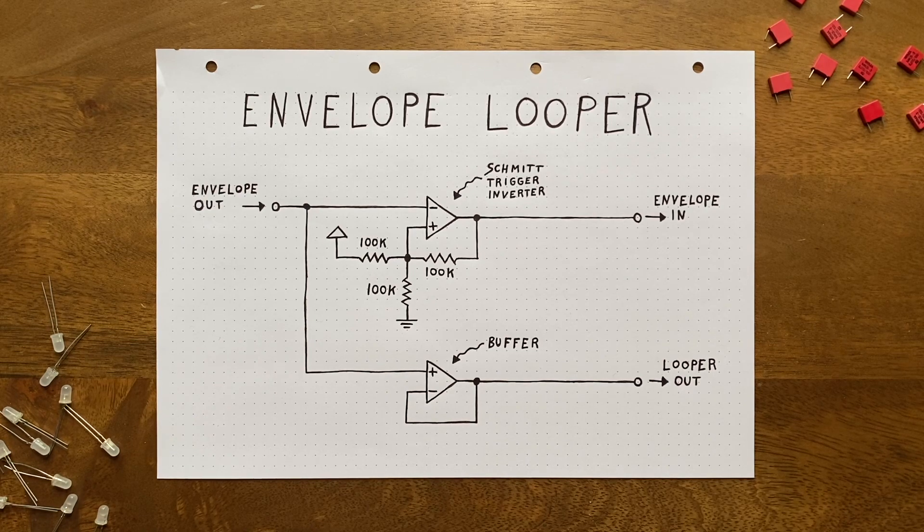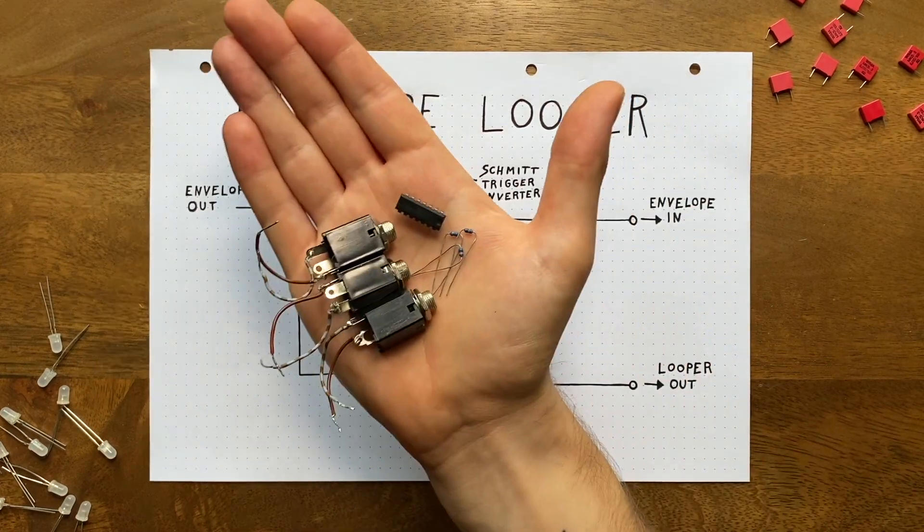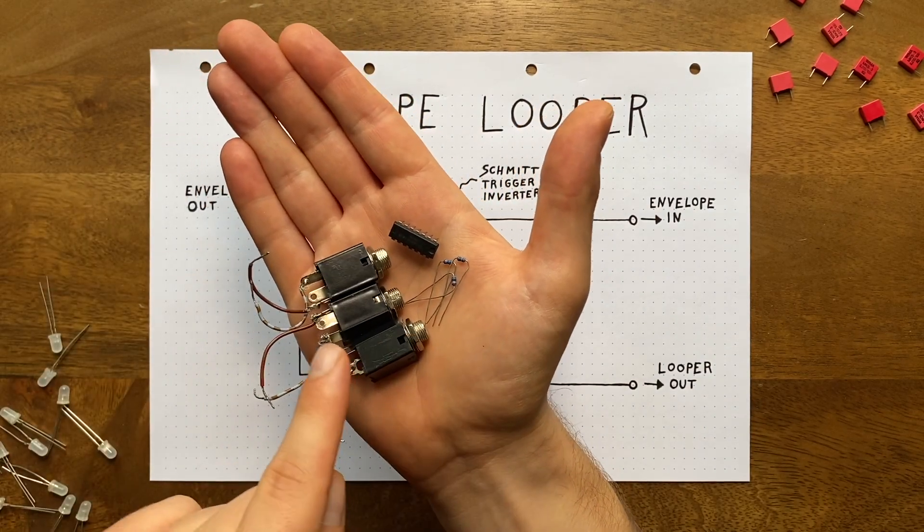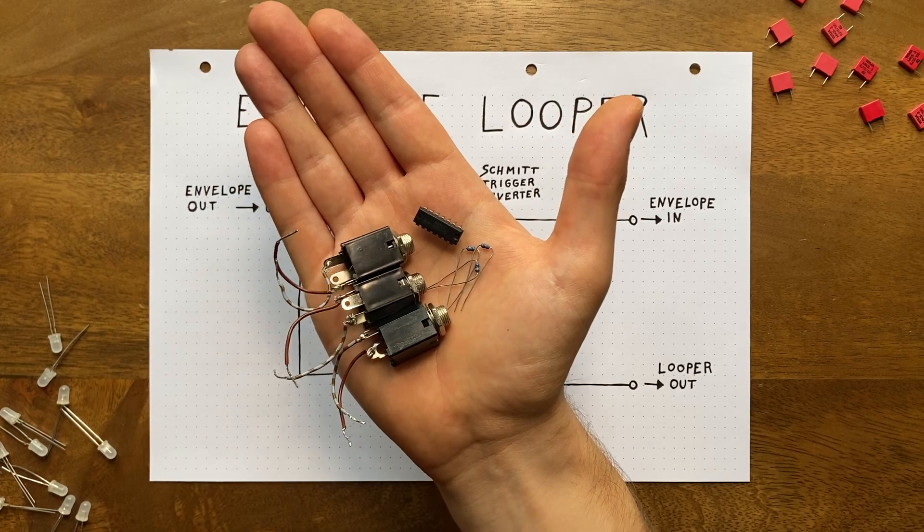To build this, we just need a handful of components. A chip with at least two op amps, three 100K resistors and three jack sockets. That's it.